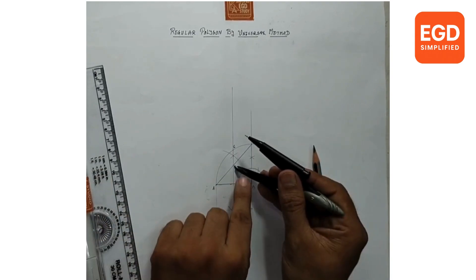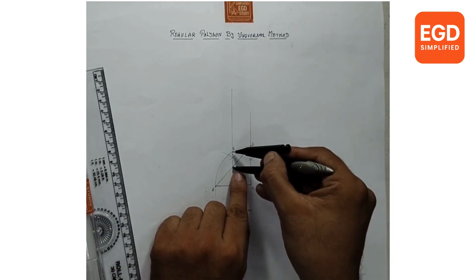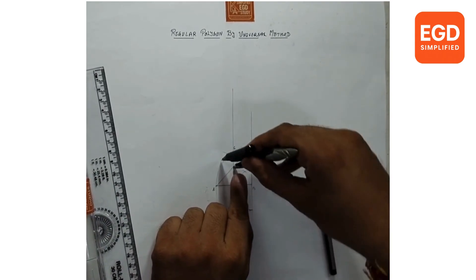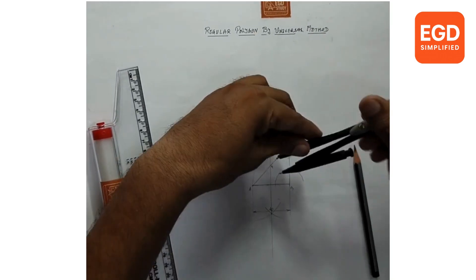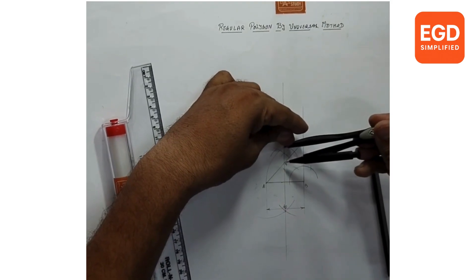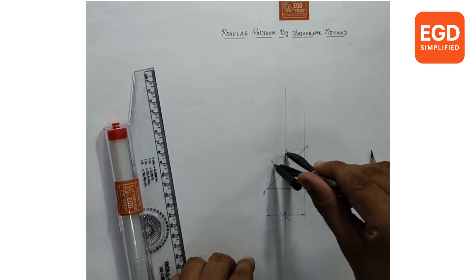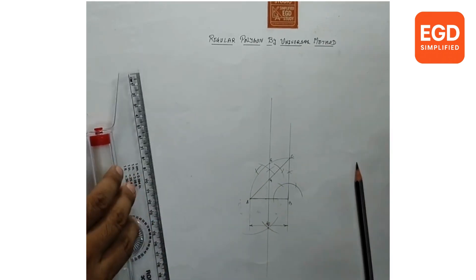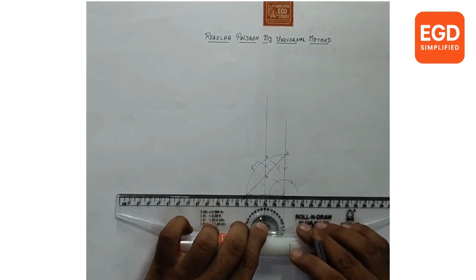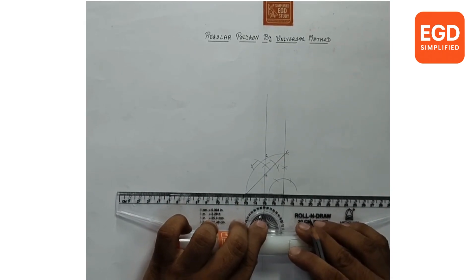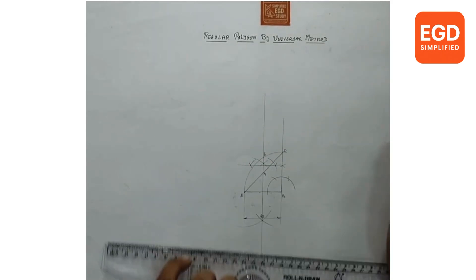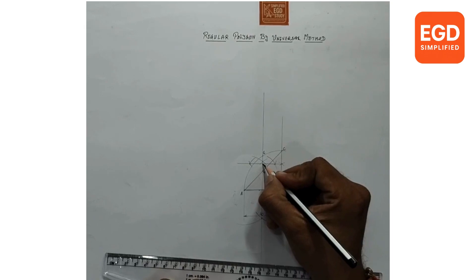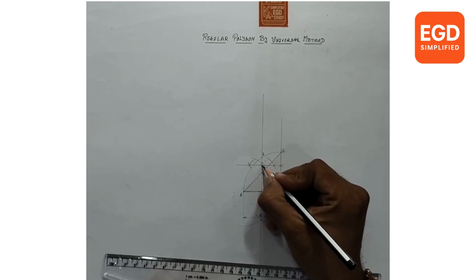Now draw the bisector of points 4 and 6. Take the measurement from 4 to 6, draw arcs on both sides from point 4, and draw arcs from point 6 on both sides. Draw a line through the intersecting arcs. Where this line intersects the bisector, give the name point number 5.